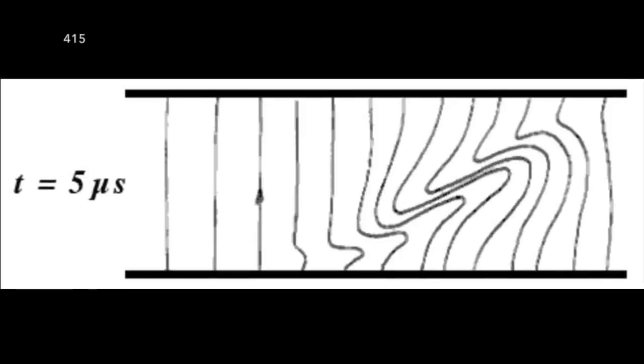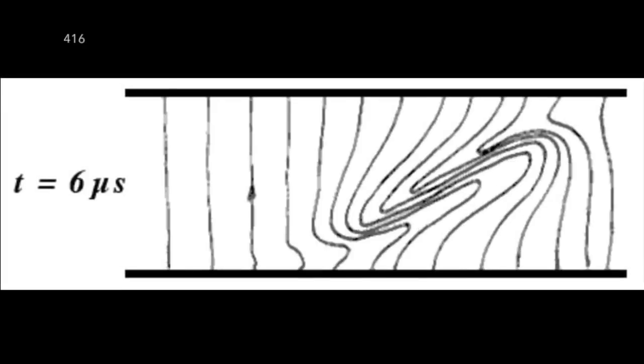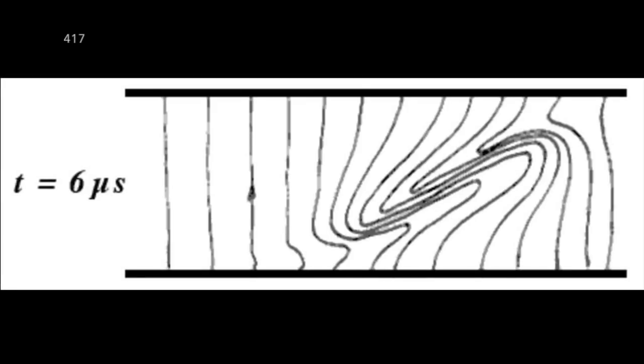It grows very fast. Its characteristic growth time is of the same order of magnitude that the one of the growth of ionization. It was discovered and even predicted in 1964 by the Russian Velikhov.